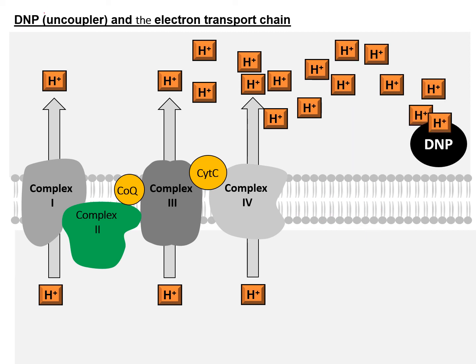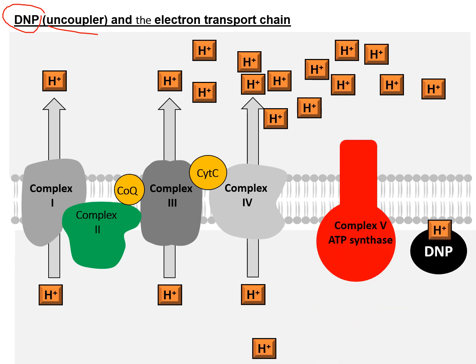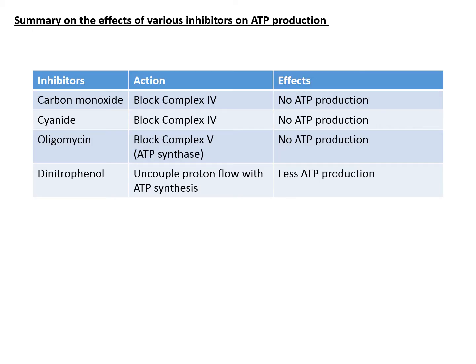How about dinitrophenol? It is also known as an uncoupler because with the presence of DNP, protons can now bypass ATP synthase by going through the DNP. With that, you will get less ATP production. This is all about the second learning outcome, and you can find a summary within this table.